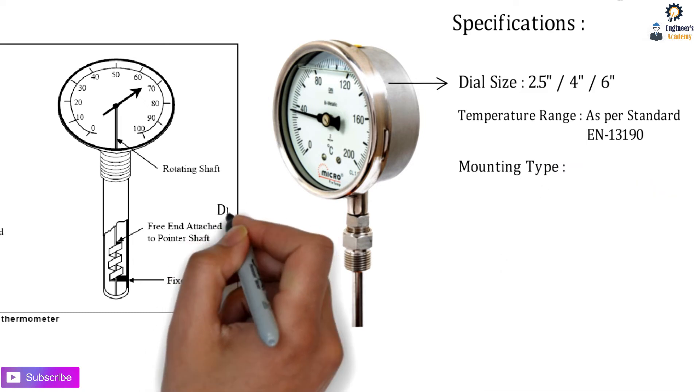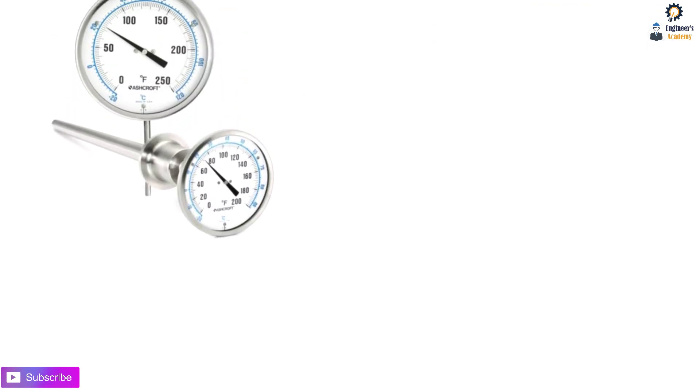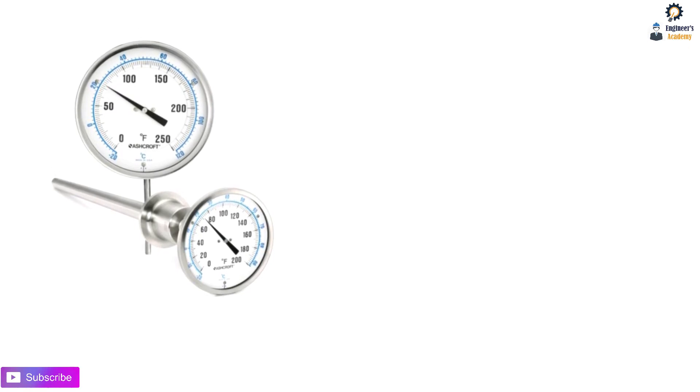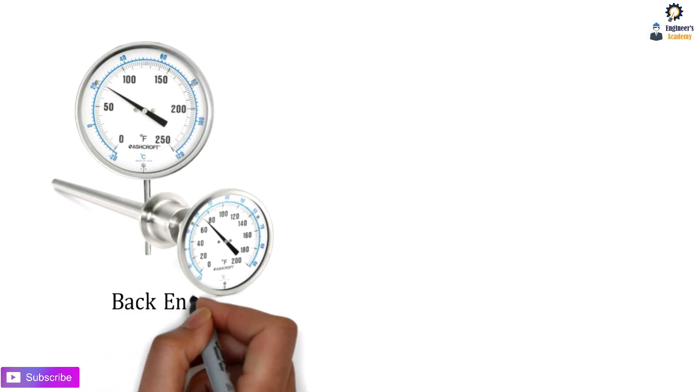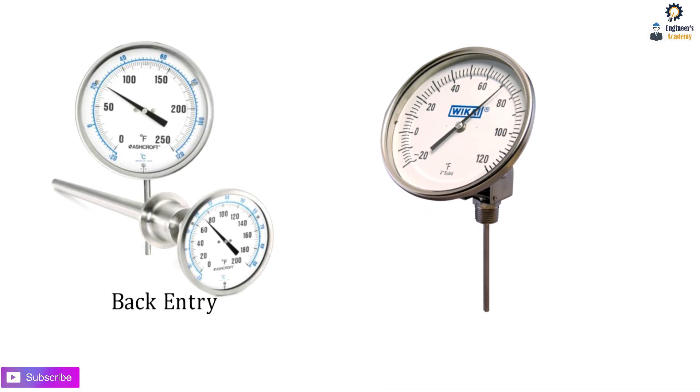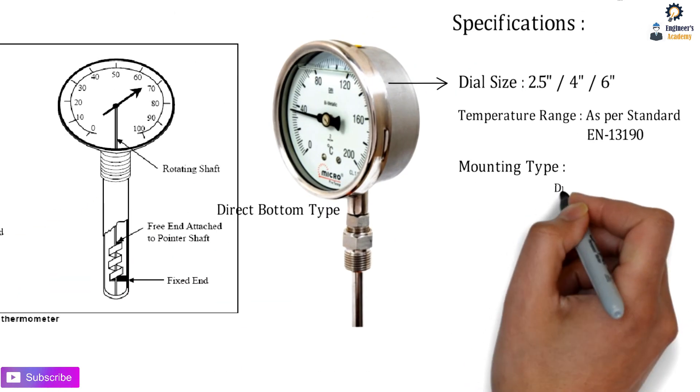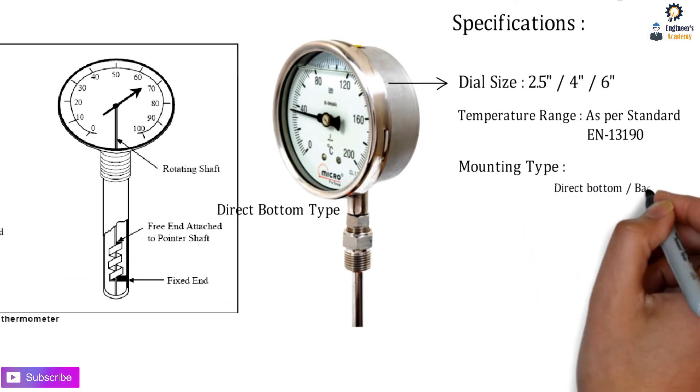Next is the mounting type. This is the direct bottom type. It can be changed to back entry for horizontal arrangement, or every angle type where it can be viewed from every angle. The mounting can be direct bottom, back entry, or every angle type.